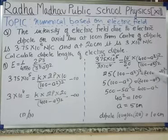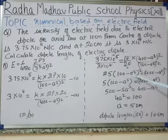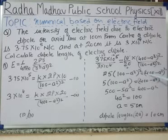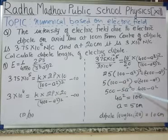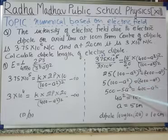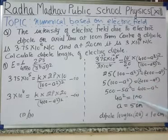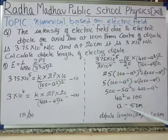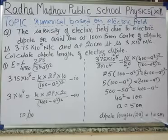Taking the square root on both sides: 5 × (100 − A²) = (400 − A²), which gives 500 − 5A² = 400 − A². This simplifies to 4A² = 100, so A = 5 centimeters. Therefore, the dipole length 2A = 10 centimeters.